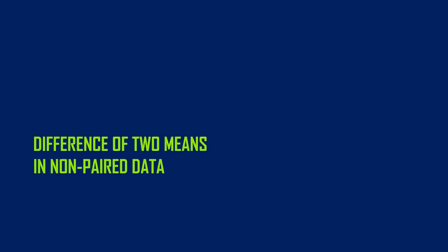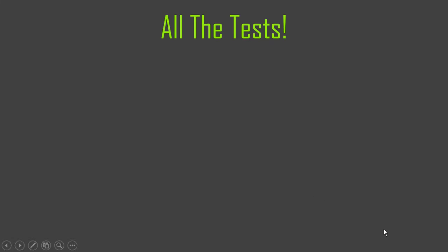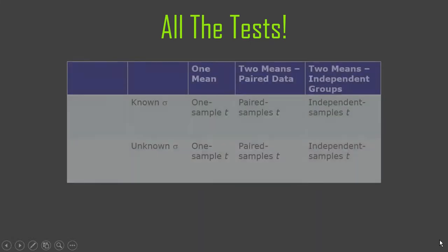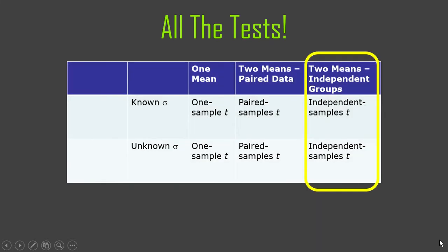Now let's get into some more details of how to do a hypothesis test for the difference between two means from independent samples — two independent samples, non-paired data. It's called the independent samples t-test; that's the most common name. All these things have multiple names, which makes everything confusing, but the most common is independent samples t-test. Some people just say independent t.